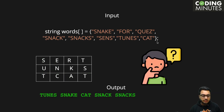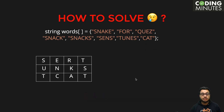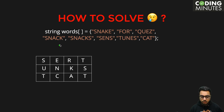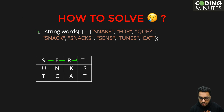So in the output you will get: tunes, snake, cat, snack, and snacks. Now the question is how do we solve this problem. A brute force approach would say: go to every cell and try to form all possible words — for example, from 'S', try s-e-r-t, s-n-a, and so on. But that leads to a very inefficient solution with exploding time complexity. We need something better using the provided word list.